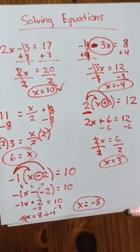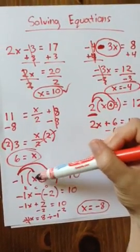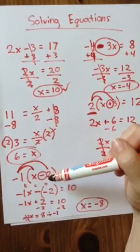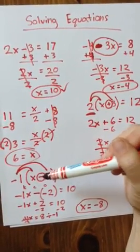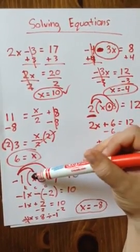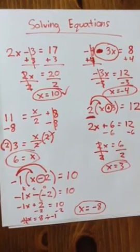All right, we can plug that back in to check to make sure that we did it right. Negative 8 minus 2. I have two numbers with the same sign. They're both negative. So 8 plus 2 is 10. They keep their sign. So this is going to be negative 10. Negative 10 times negative 1 is 10. It works out.